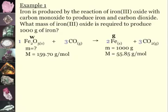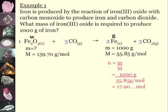I want the amount of iron 3 oxide. Mass is what I'm looking for. I know what the molar mass is. So I figure out the number of moles of my given by taking 1000 grams and dividing it by the molar mass, which gives me 17.9 grams.